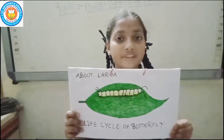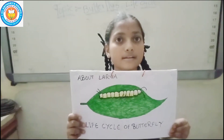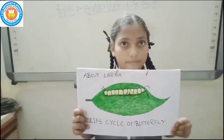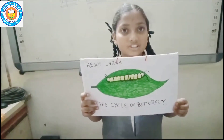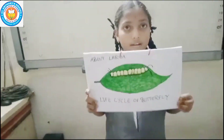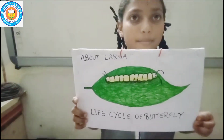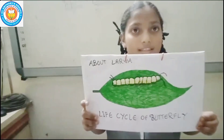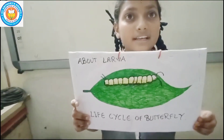Second stage: the second stage of the life cycle of a butterfly is known as larva. Larva comes by hatching eggs. Larva is also known as caterpillar. The larva grows by eating leaves.